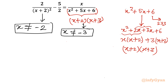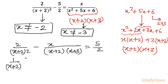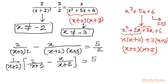Now let's rearrange the terms. I will consider 2 over (x+2)² minus x over (x+2)(x+3) equal to 5 over 2. We can take (x+2) common, so I write 1 over (x+2) times the bracket 2 over (x+2) minus x over (x+3), and the right-hand side is 5 over 2.